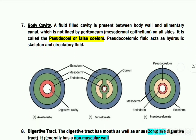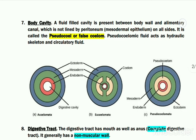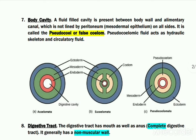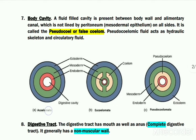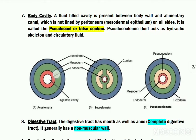Regarding their body cavity: in sk-helminths there is a cavity present between the body wall and the alimentary canal, but this body cavity is not a true coelom — rather it is referred to as false coelom or pseudocoelom. To understand the difference, consider a diagram showing transverse sections of different animals. The first is a transverse section of an acoelomate, such as the platyhelminthes, which do not have any body cavity at all.